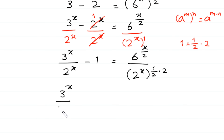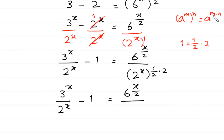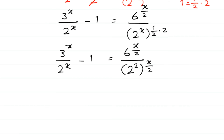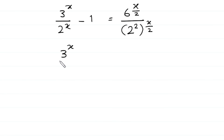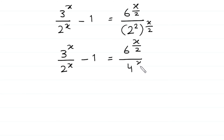Next, 3 to the power x over 2 to the power x, minus 1, is equal to 6 to the power x over 2 divided by — according to the property of exponents, a to the power m whole to the power n equals a to the power m times n — we multiply this power x with 1 over 2, so x times 1 over 2 becomes x over 2. We write the power x over 2 outside the brackets and move power 2 inside, giving 2 to the power 2, whole to the power x over 2. Since 2 squared is 4, the denominator becomes 4 to the power x over 2.